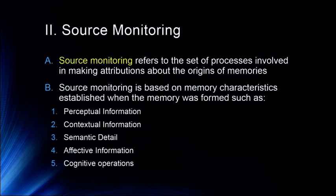We make a lot of what we call source monitoring errors, where we misidentify the source of a memory. We often mistake things that aren't just happening inside our own heads with things that actually happened. We have a phenomenon called imagination inflation — if you imagine doing something enough times, you can actually begin to believe it happened. Children are particularly bad at source monitoring, as source monitoring is accomplished primarily by the frontal lobes, which are still developing early in life.